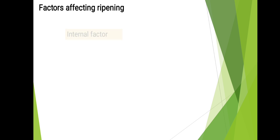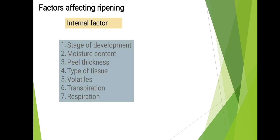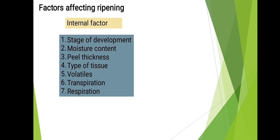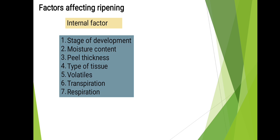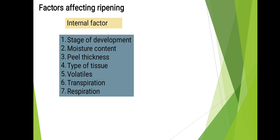Factors affecting ripening. Internal factors include: 1. Stage of development, 2. Moisture content, 3. Peel thickness, 4. Type of tissue, 5. Volatiles, 6. Transpiration, 7. Respiration.